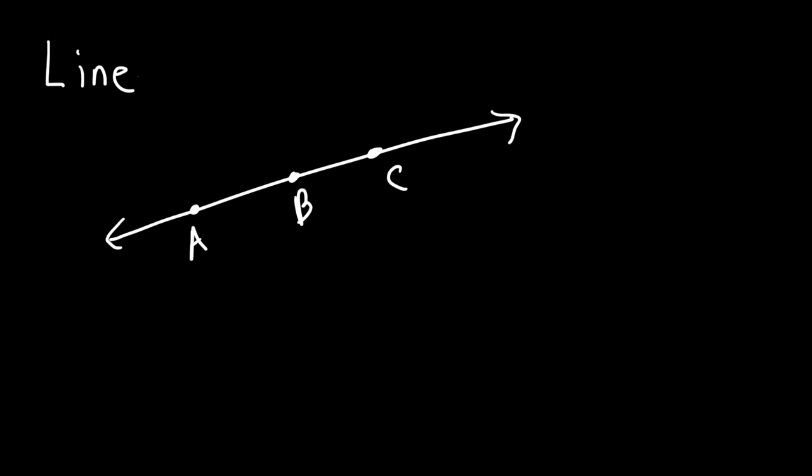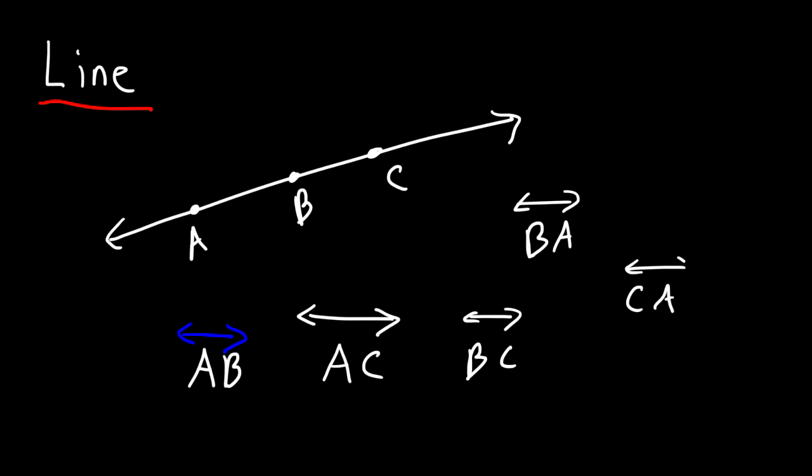Now, you need to be able to name this particular line. So you can call it line AB, and for lines, you need to have both arrows to show that they extend in both directions. You can call it AC, you can call it line BC. You could also call it BA, or line CA, and we could also say line CB. So as you can see, with this particular line that contains three points on it that's highlighted, there are six different ways in which you can name that line.